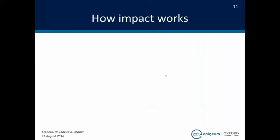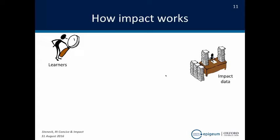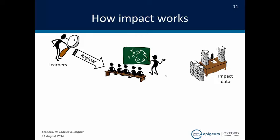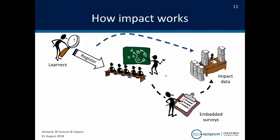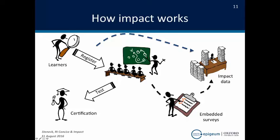It works as follows: a learner registers for the course and takes the course. As they're taking the course, the registration information is fed over into the IMPACT data — de-identified for most crucial topics — so that we can start to figure out what's going on. As they're taking the course, we ask certain questions, and those embedded survey responses go into the IMPACT data. That creates our data file for analyzing learning, climate, and other things. We give tests, and it's the tests that are used for certification.